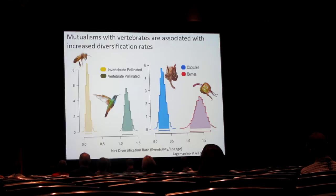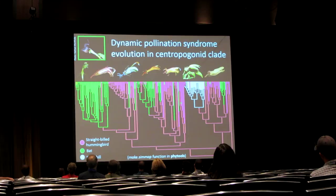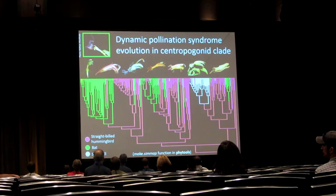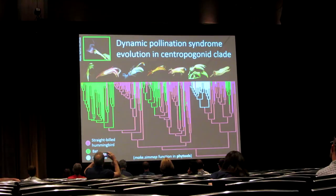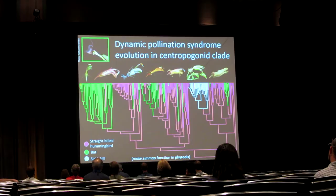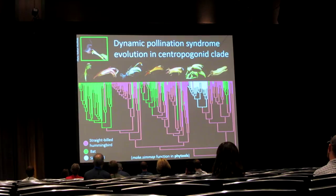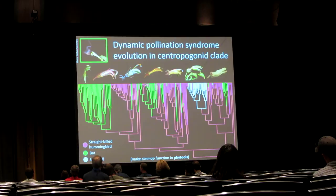Jumping into just the vertebrate pollination story within the Centropogon subclade, we see a very dynamic evolution of pollination syndrome. From an ancestrally hummingbird-pollinated state shown in pink, we see at least 14 independent evolutions of bat pollination, with another nine reversals back to hummingbird pollination. While we see no difference in diversification rate between bat and hummingbird lineages, this is an incredibly dynamic pattern with direct implications for reproductive isolation and therefore speciation rate as well.